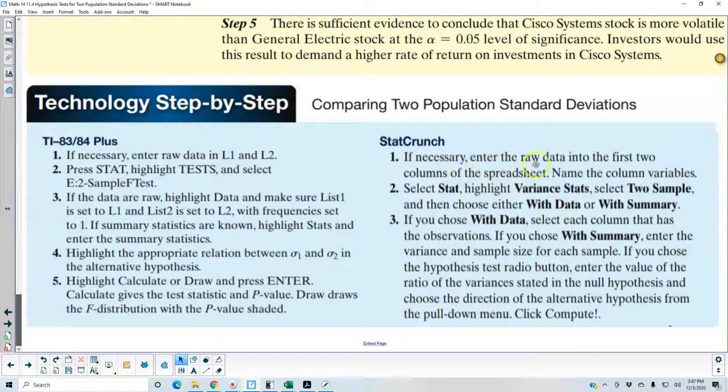If necessary, enter the raw data into the first two columns of the spreadsheet, which is what we've done, and name the columns of the variables. Now we're going to select variant stats.